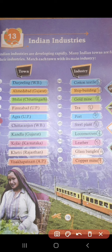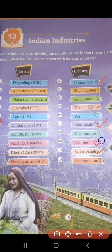Now let us solve this exercise. Darjeeling, West Bengal is famous for tea. Ahmedabad, Gujarat is famous for cotton textile. Bhilai, Chhattisgarh is famous for steel plant. Firozabad, UP is famous for glass bangles. Agra, UP is famous for leather. Chittaranjan, West Bengal is famous for locomotives. Kandla, Gujarat is famous for port. Kolar, Karnataka is famous for gold mine. Khetri, Rajasthan is famous for copper mine. And Visakhapatnam is famous for ship building.